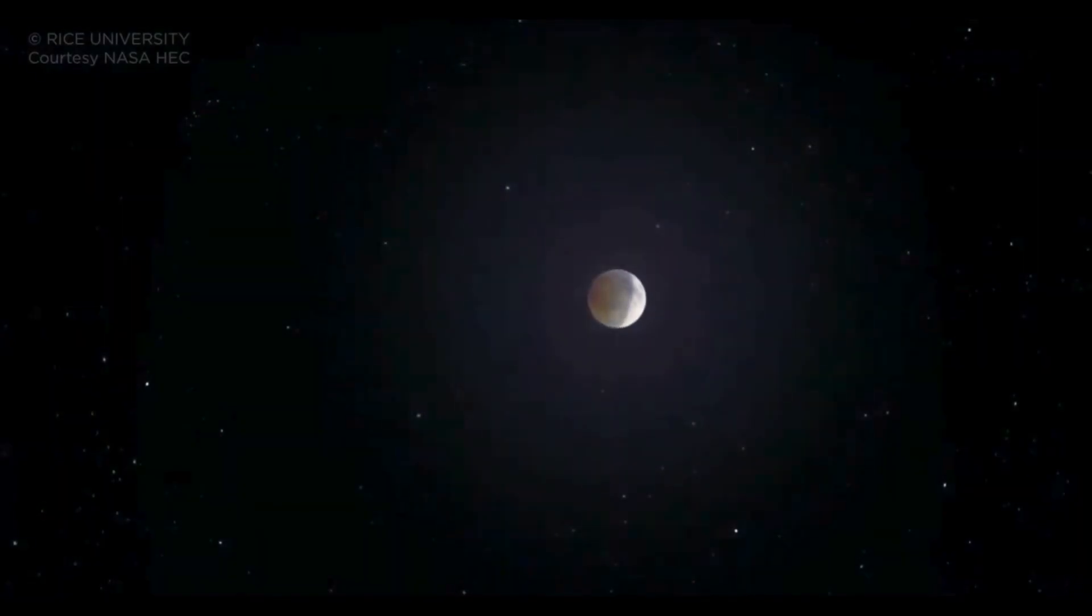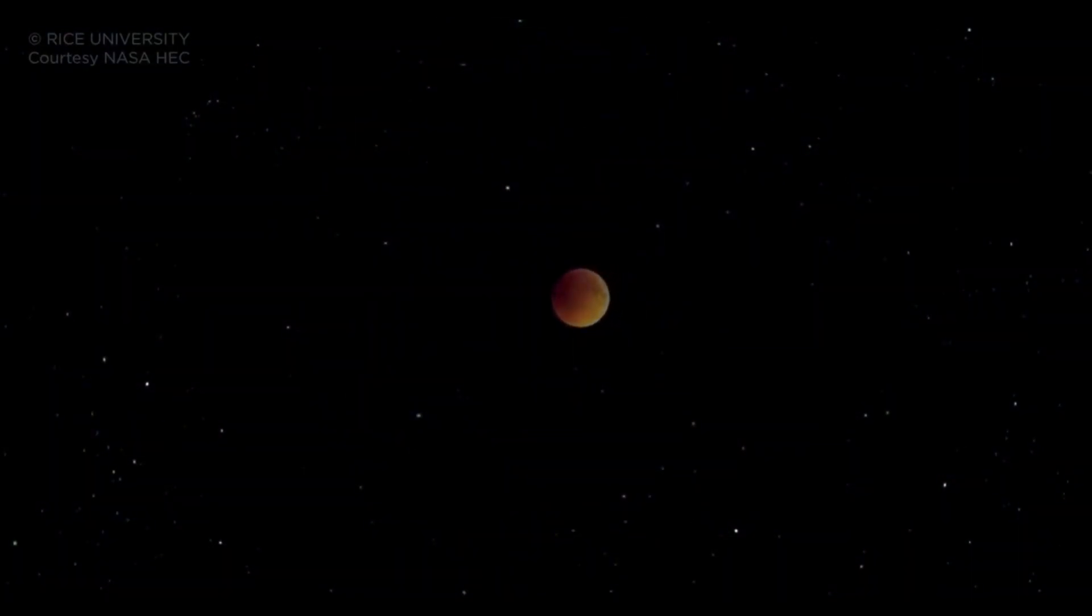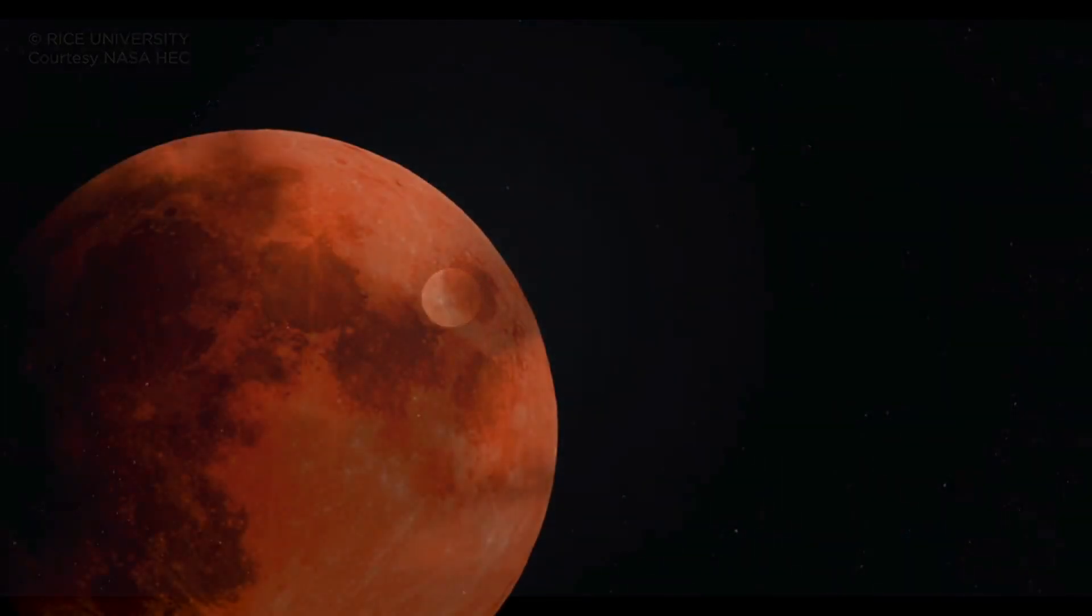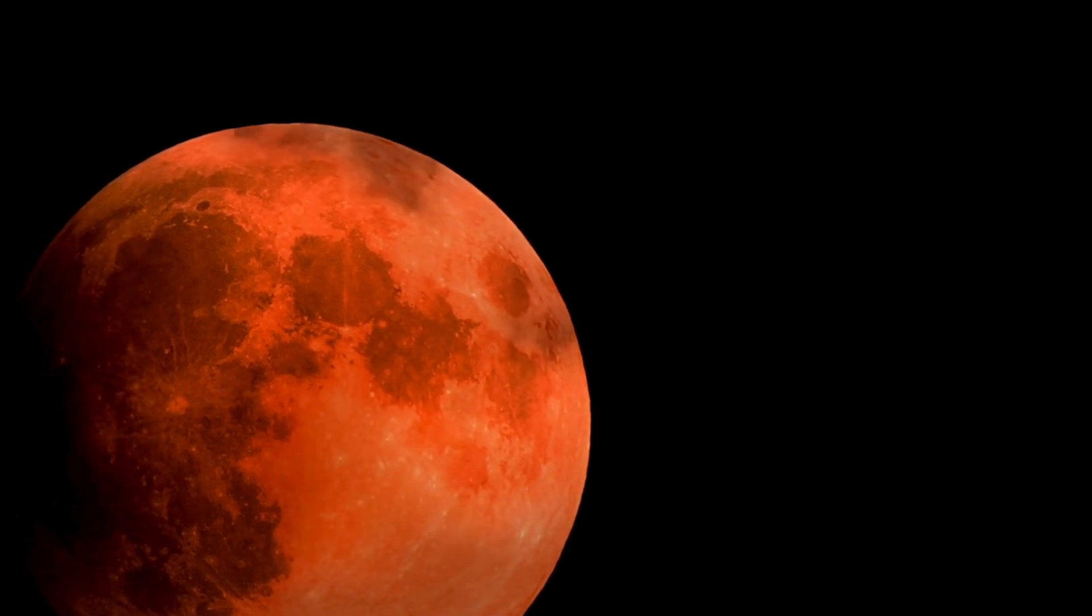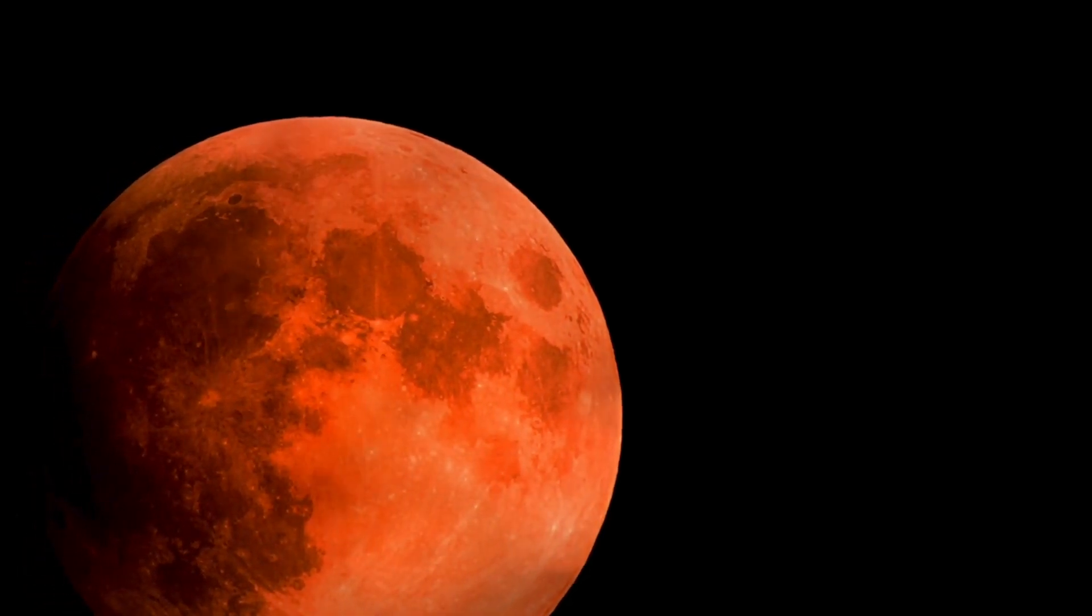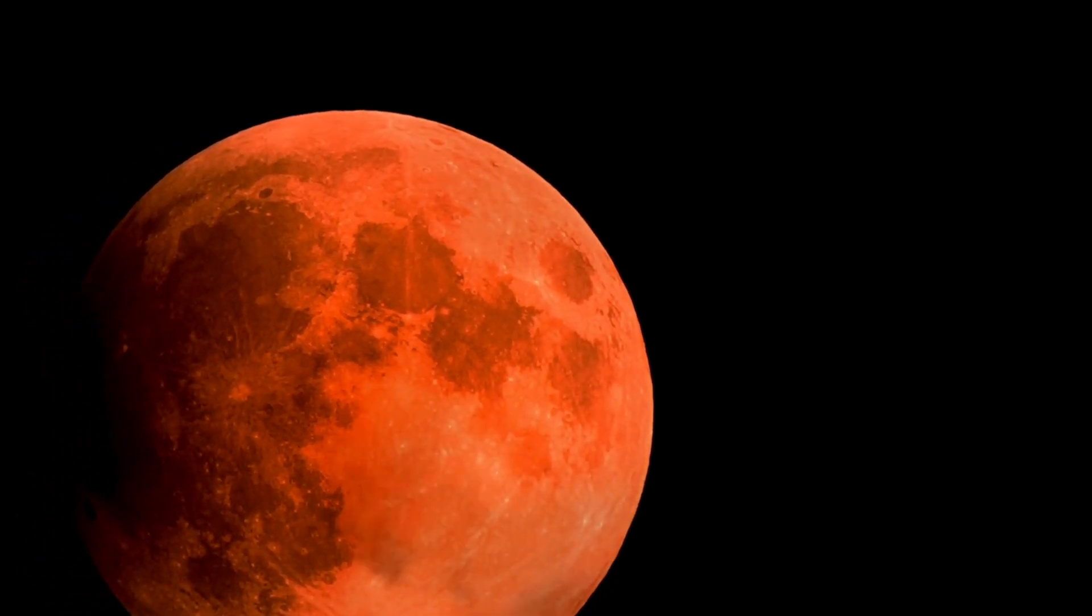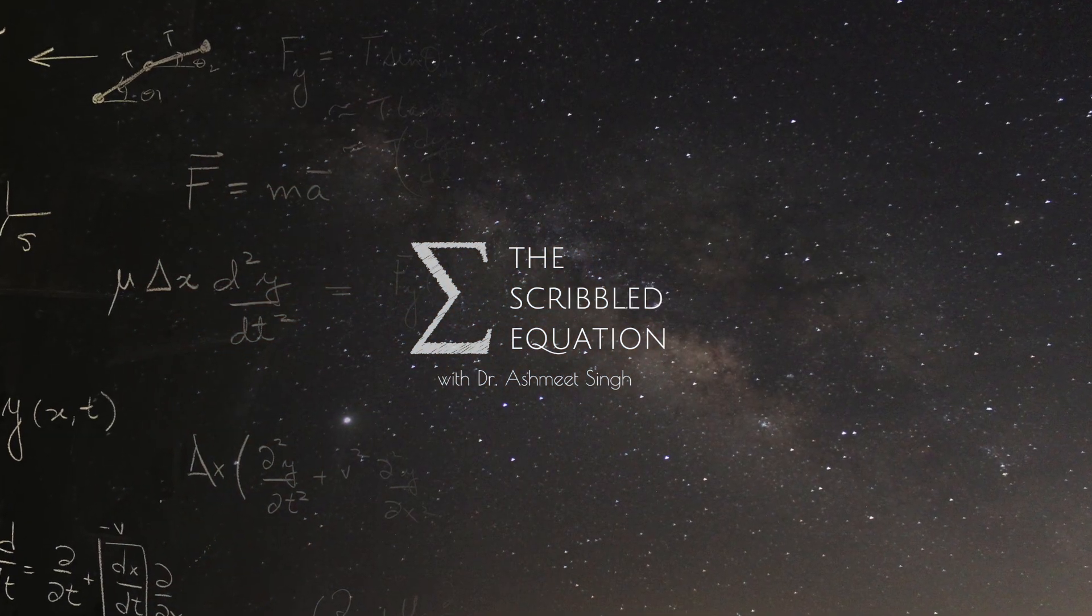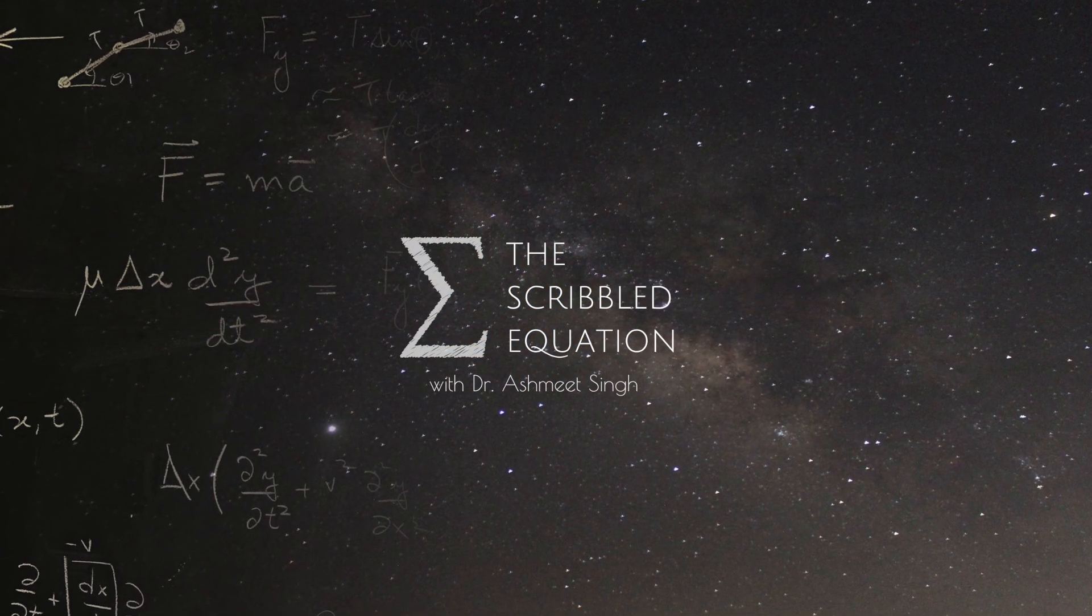So, when you step outside on September 7th and watch the Moon turn red, you are not just seeing an eclipse. It's geometry, orbital mechanics and scattering, all playing out above our heads in real time. You are watching physics draw with light and shadow on the largest canvas we know, the night sky. So clear skies, and I'll see you on the other side.